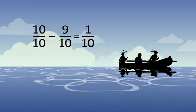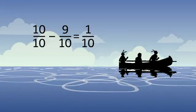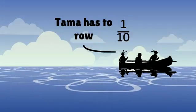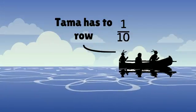We take 10-10ths and subtract it by 9-10ths, which gives us 1-10th. And we notice that Tama has to row 1-10ths of the way to reach the other side.